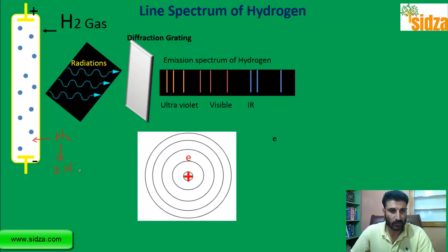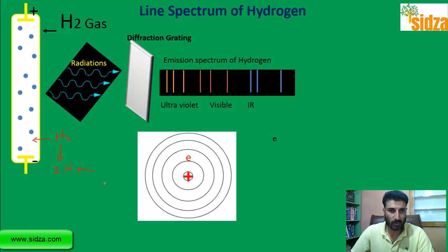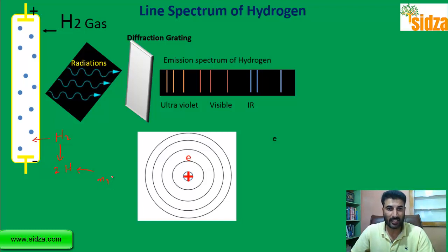The electrons present in these hydrogen atoms are getting excited. The ground state for the hydrogen atom is N1 — we have one electron in the hydrogen atom present in the first energy level, N1. But now the electrons are getting excited from the N1 state to higher energy states.